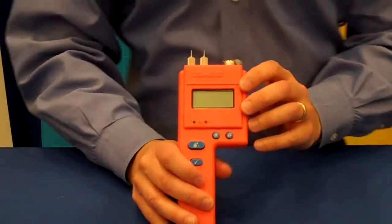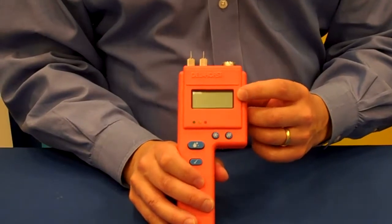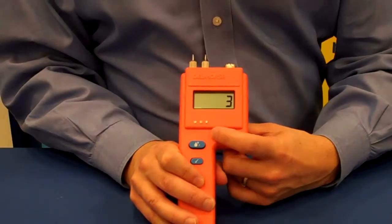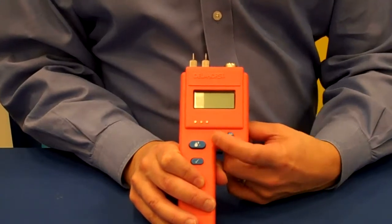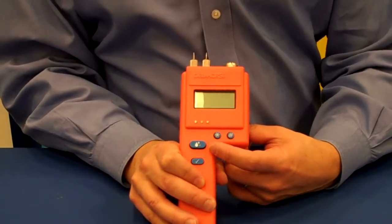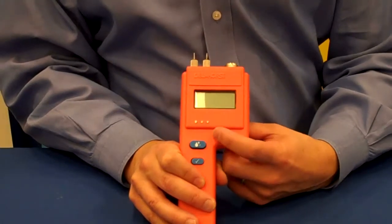The BD2100 has a digital display. It offers three scales that you can choose from. There's scale number one, which reads wood moisture content over the range of six to forty percent moisture content.